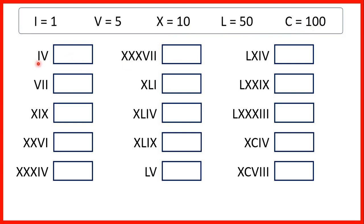So first, IV is 4, because that's 1 before 5. VI is 7, because that's 5 and then 2 ones.